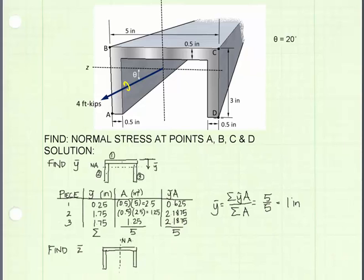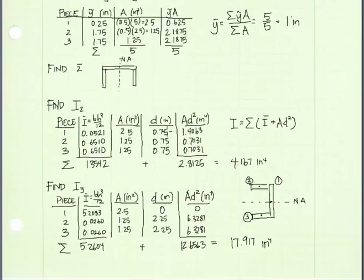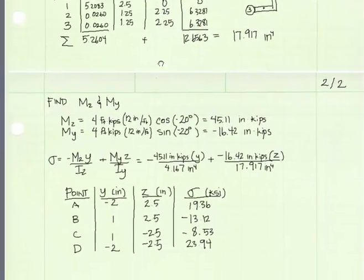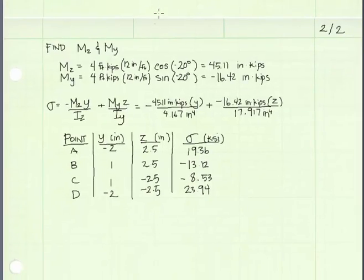We could use the right hand rule to verify that D does, in fact, have the highest tension stress while B will have the highest compression stress. Notice because this section is not symmetrical about the z axis, it shows us that the maximum values for tension and compression stress are different. And we're done.